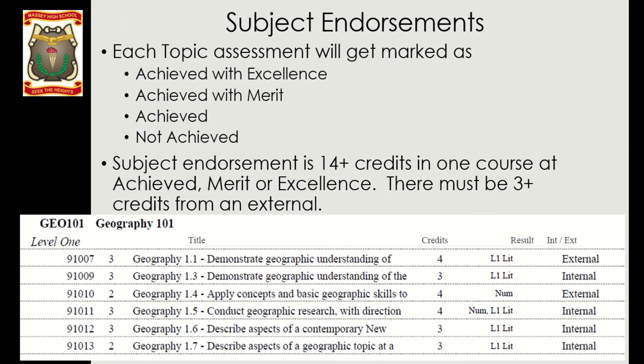Each topic, when assessed, will be awarded a mark of either Achieved with Excellence, Achieved with Merit, Achieved, or Not Achieved. It's important to recognise subject endorsements: a student gets a subject endorsement when they earn 14 credits, of which three must come from one of the external exams, at the level of Merit or Excellence. This is where we start thinking about the quality of the credits.